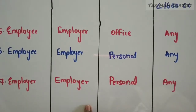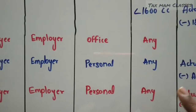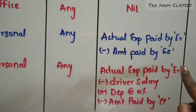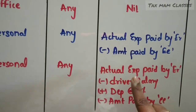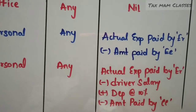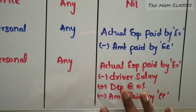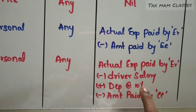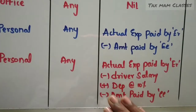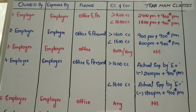In the last situation, the car is owned by the employer, expenses are reimbursed by the employer, and the car is used for personal purpose — it may be any car. The taxable value of perquisite is: actual expenses paid by the employer, minus driver salary if a driver is employed, plus depreciation at 10% of original cost, minus the amount paid by the employee. The net amount is the taxable amount in the hands of the employee.